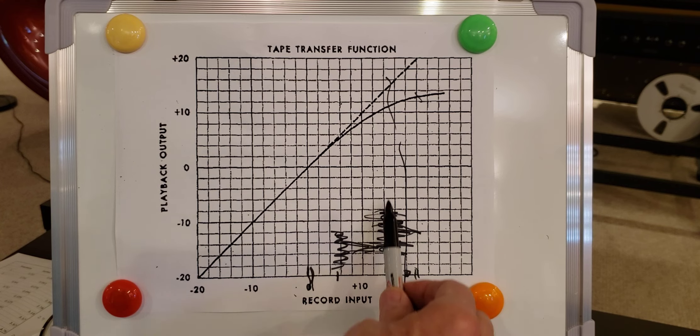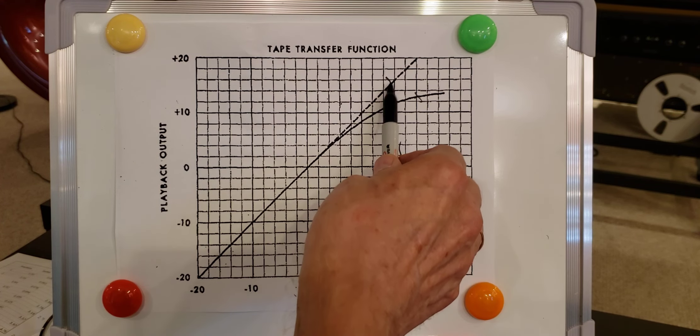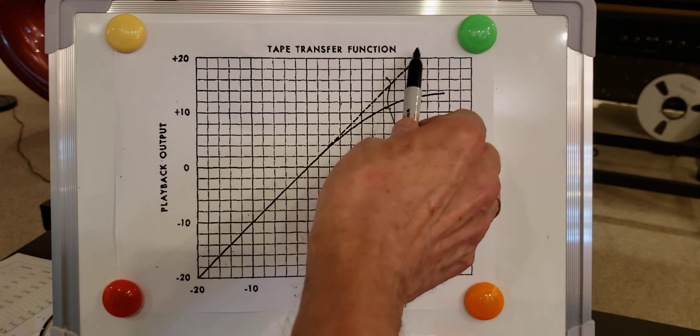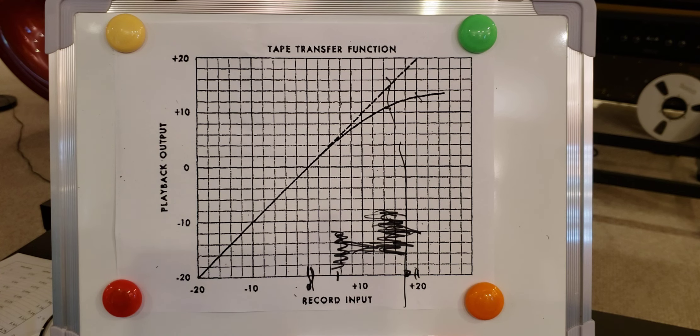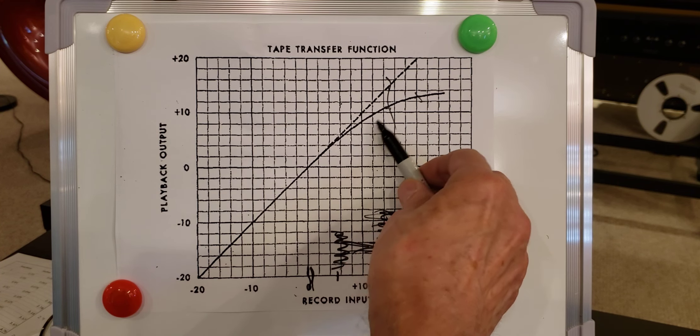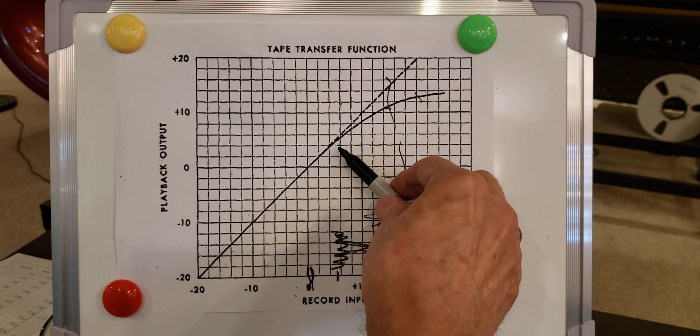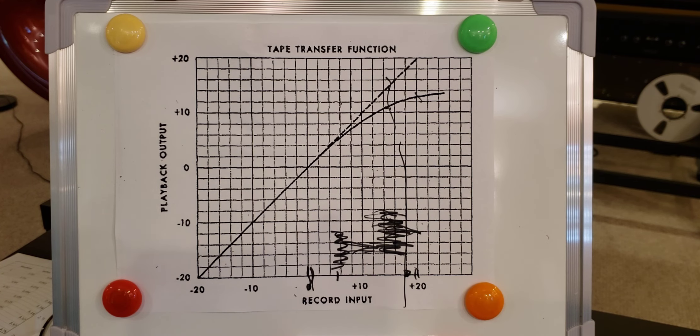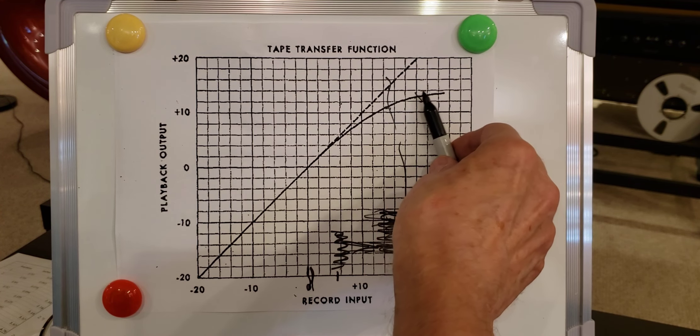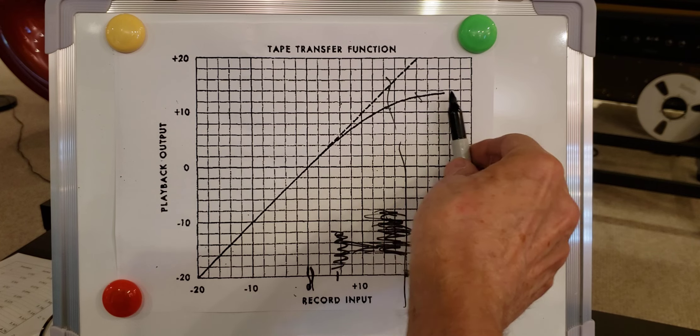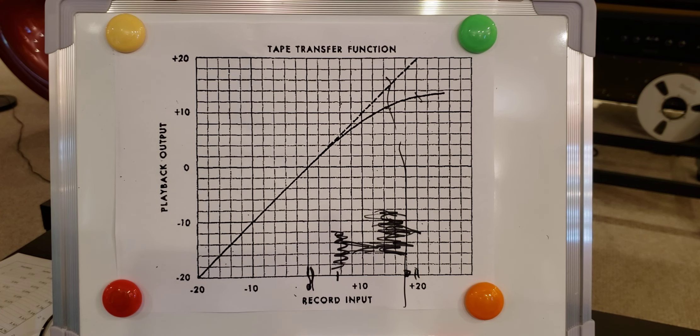And if you follow this area up you will see this big deviation from original magnetization curve. So you're already very deep into the compression region. You are on the almost flat area of the curve. And this is why this particular tape will sound so compressed and overloaded.